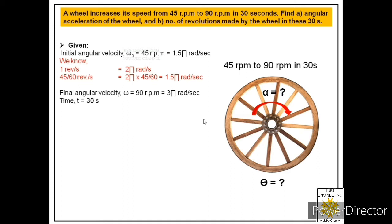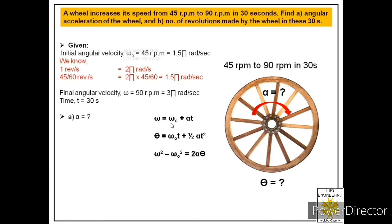Now we have to find angular acceleration of the wheel, that is alpha. This is a uniformly accelerated motion, so three equations are applicable: omega equals omega naught plus alpha t; theta equals omega naught t plus half alpha t squared; and omega squared minus omega naught squared equals 2 alpha theta.